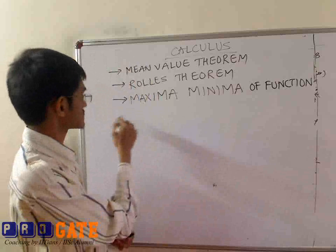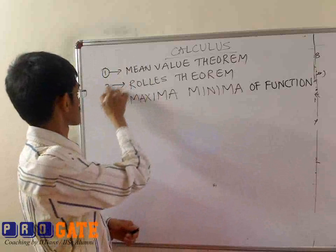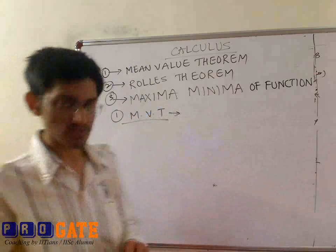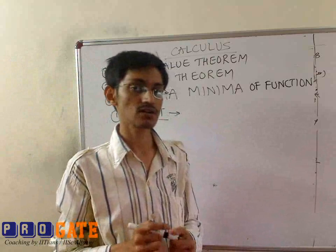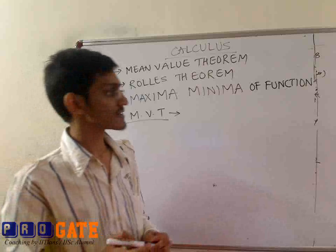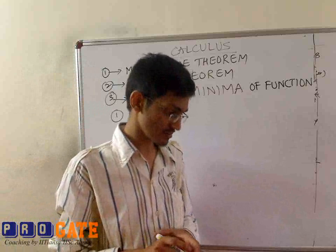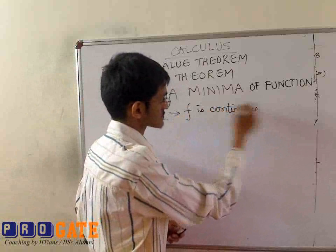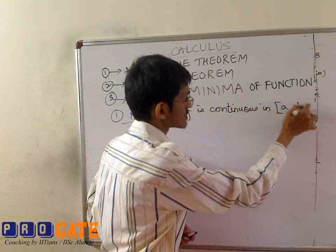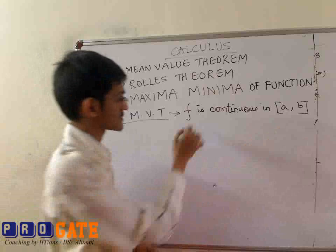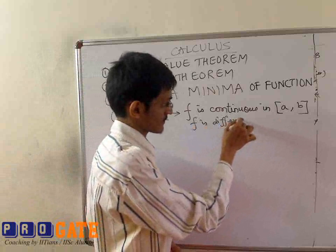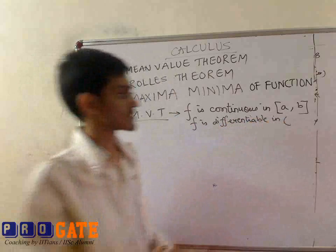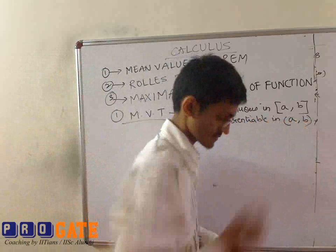So let's start with the mean value theorem first. The statement of the mean value theorem goes as follows: let f be a continuous function in the closed interval [a, b], and let f be differentiable in the open interval (a, b).